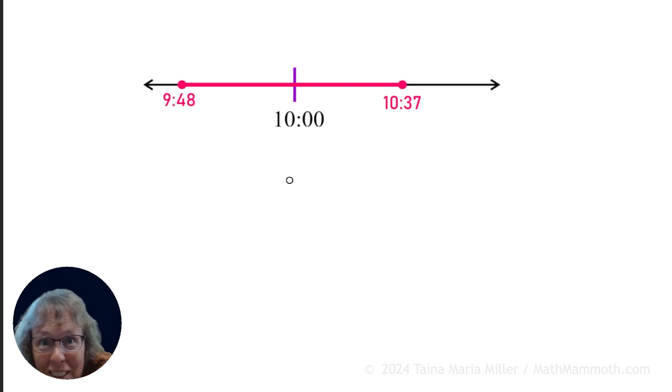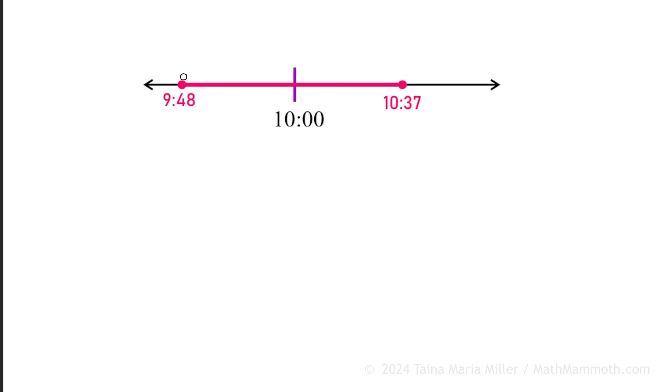What do we get? What is the elapsed time? From here till here, first of all. From 48 till 60 minutes, because the full hour is 60 minutes. Or you can go from 48 till 50 till 60. You should get 12 minutes right there.